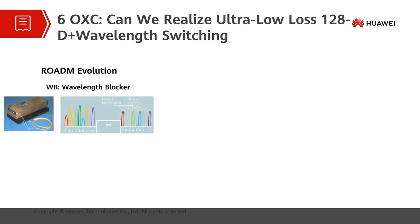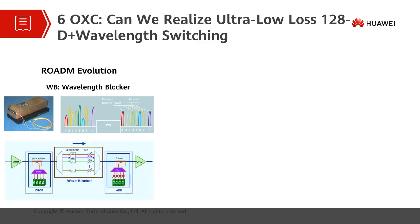The initial stage was ROADM based on the Wavelength Blocker (WB) technology, first commercialized in 2001. A switch in the WB wavelength blocker can block a wavelength — this is two-dimensional. The optical splitter divides the optical input signals into two parts: one part is downloaded through the drop filter, and the other part is transmitted to the demultiplexer. The wavelength blocker module blocks the drop optical signal to implement the drop function. The add filter uploads local wavelengths to the coupler for coupling and output, implementing the add and drop function.